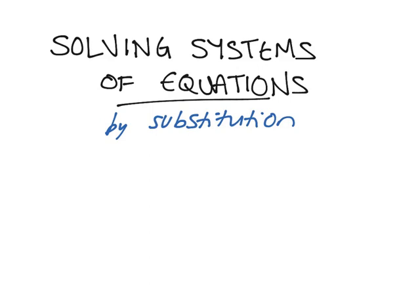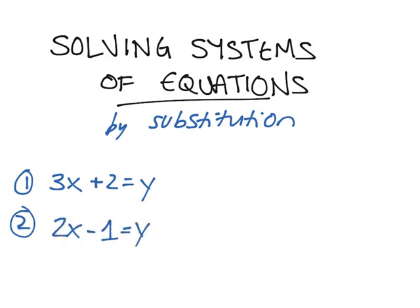Say you have a system of two equations. Our first equation is 3x plus 2 is equal to y. And our second equation is 2x minus 1 is equal to y. Now, our job is to find an x and y pair that satisfies both of these equations. That is, if you put in our x and y pair into the first equation, it would be true. And into the second equation, it would also be true.